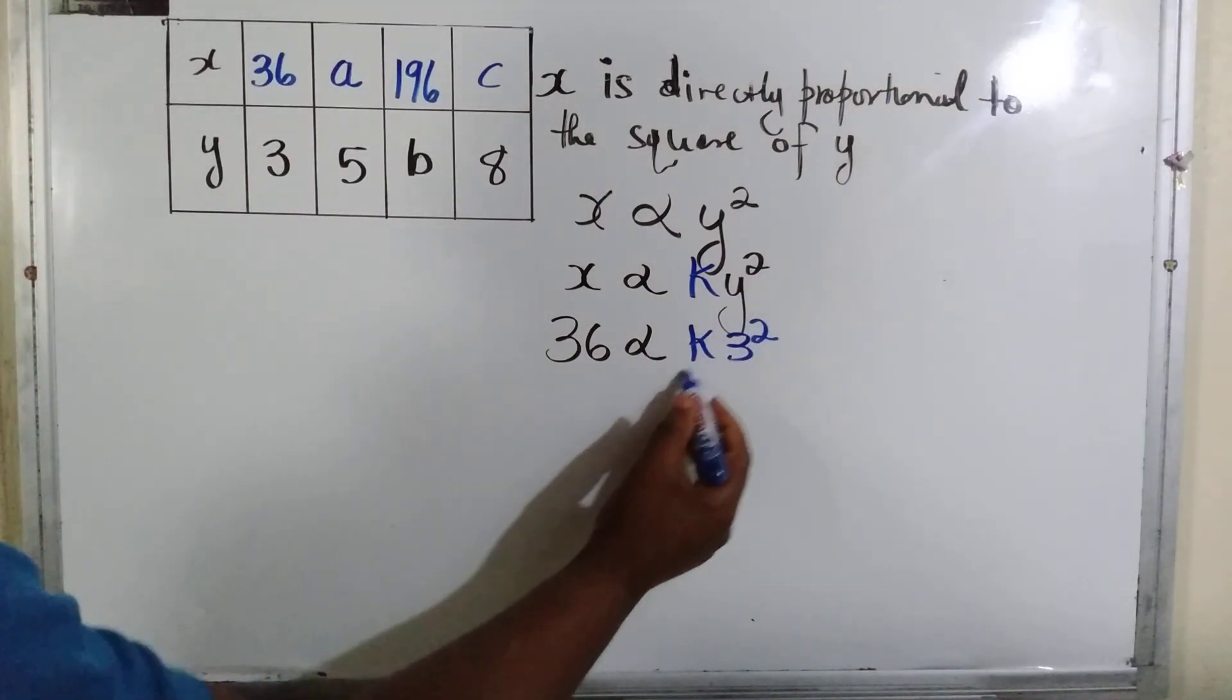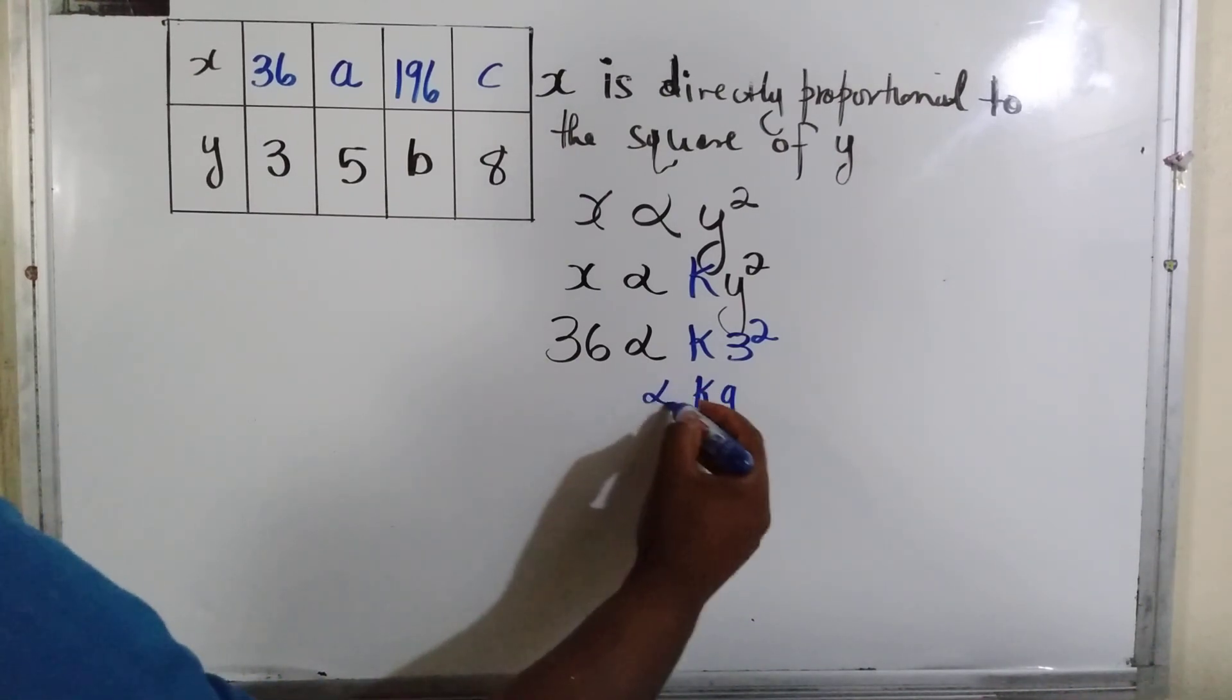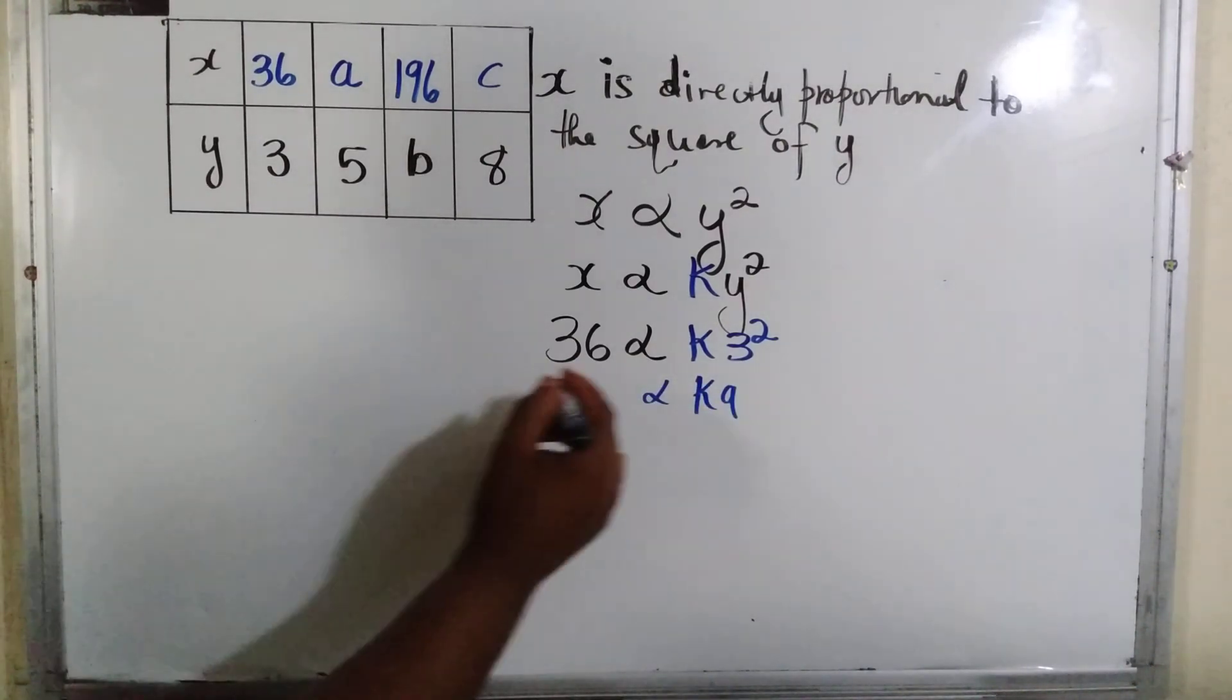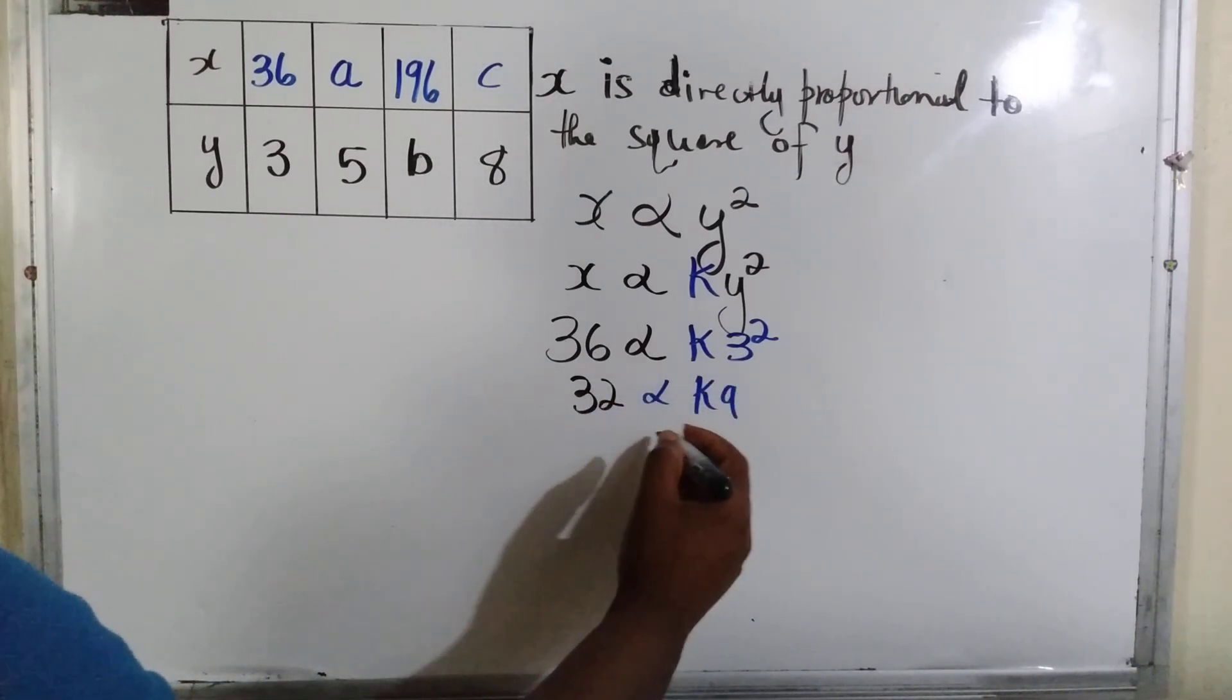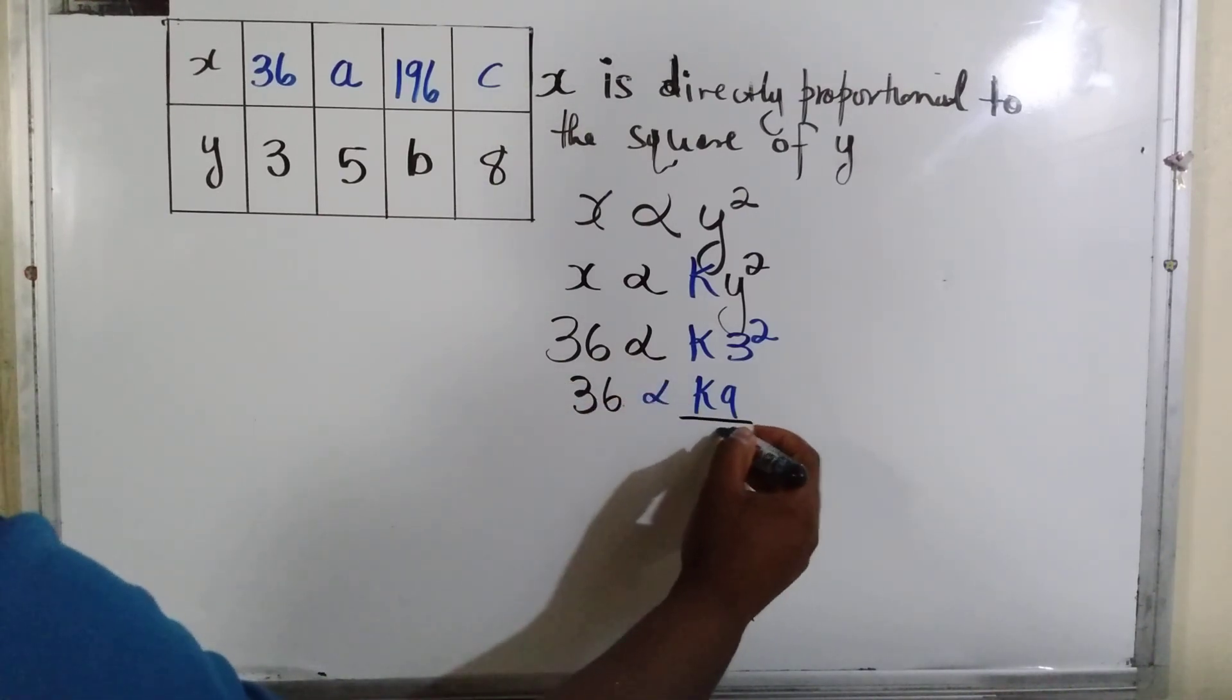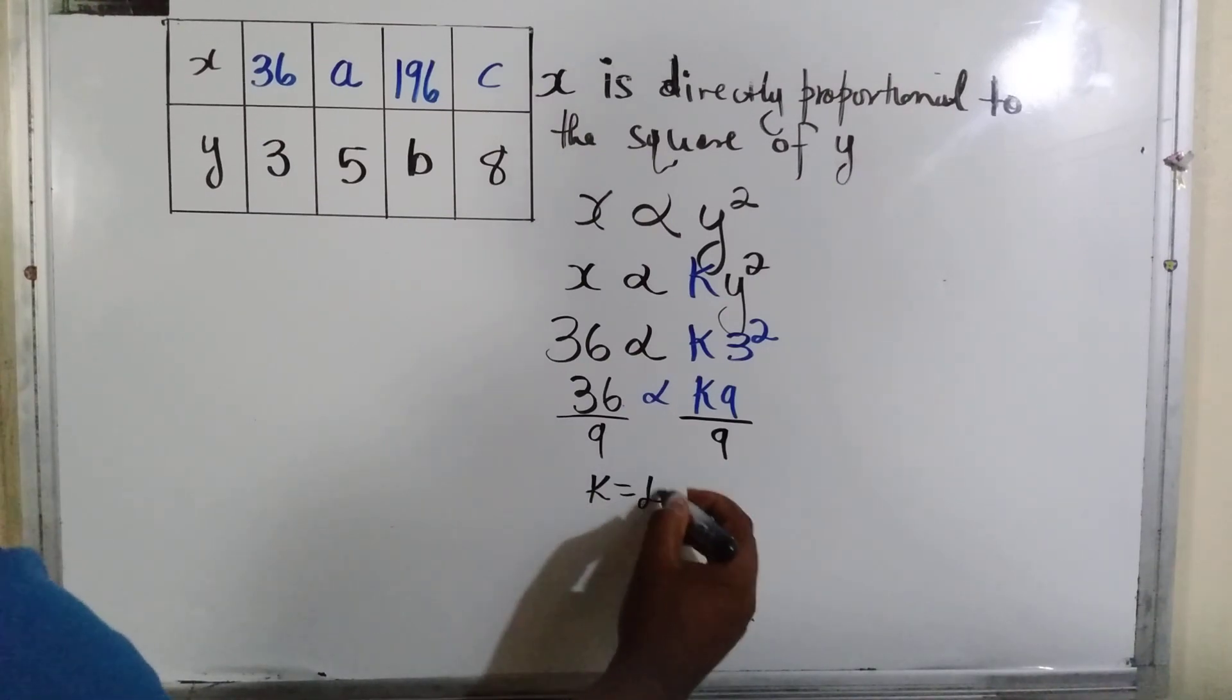3 times 3, that's 9, so this becomes 9k. We can turn it around and say 9k. We divide by 9 to get the value of k, so k equals 4.